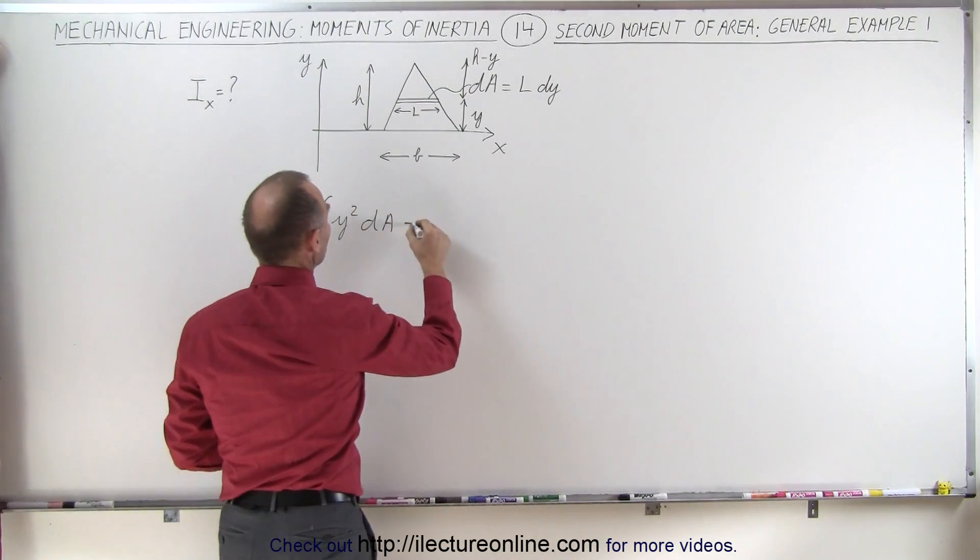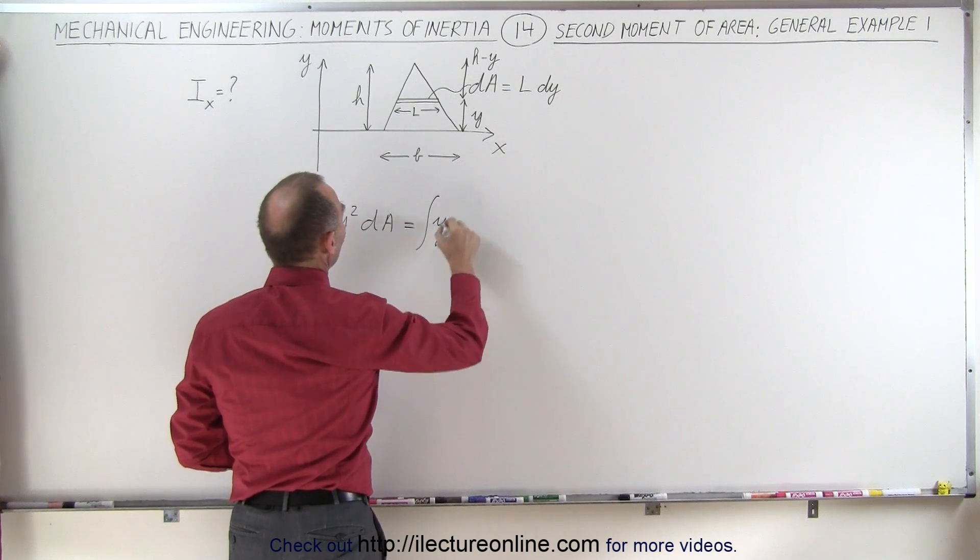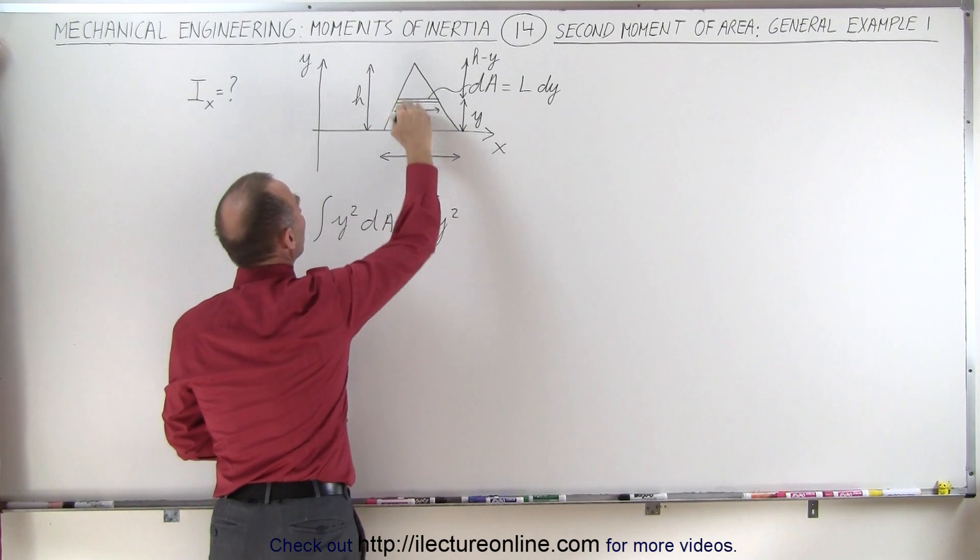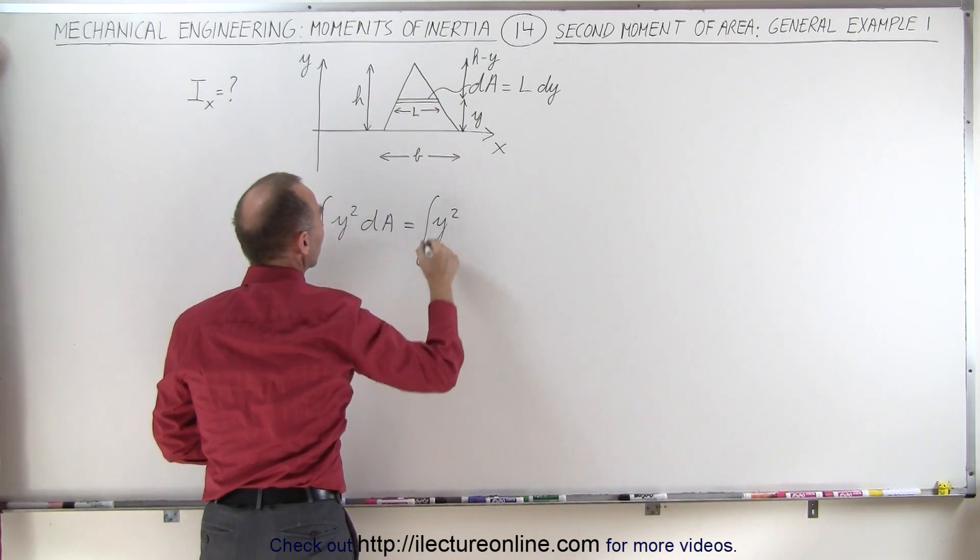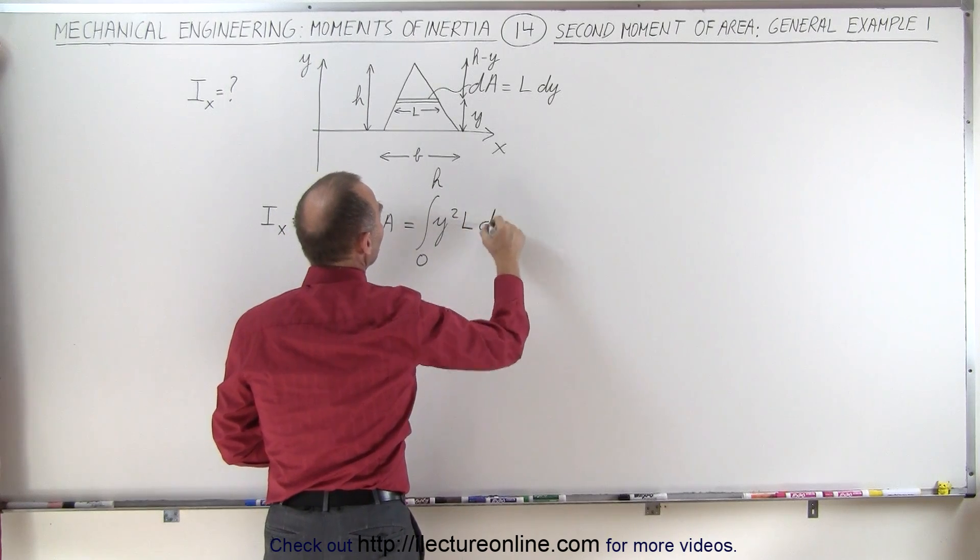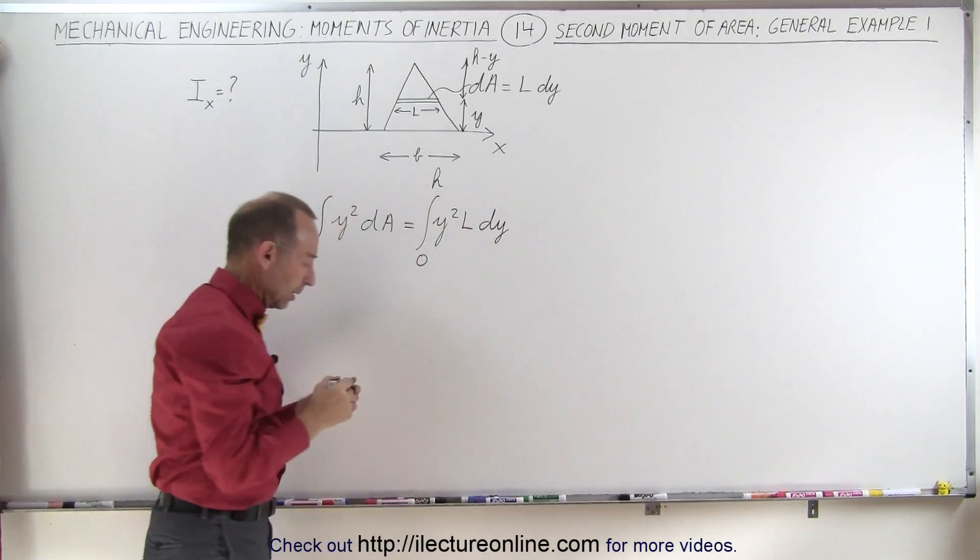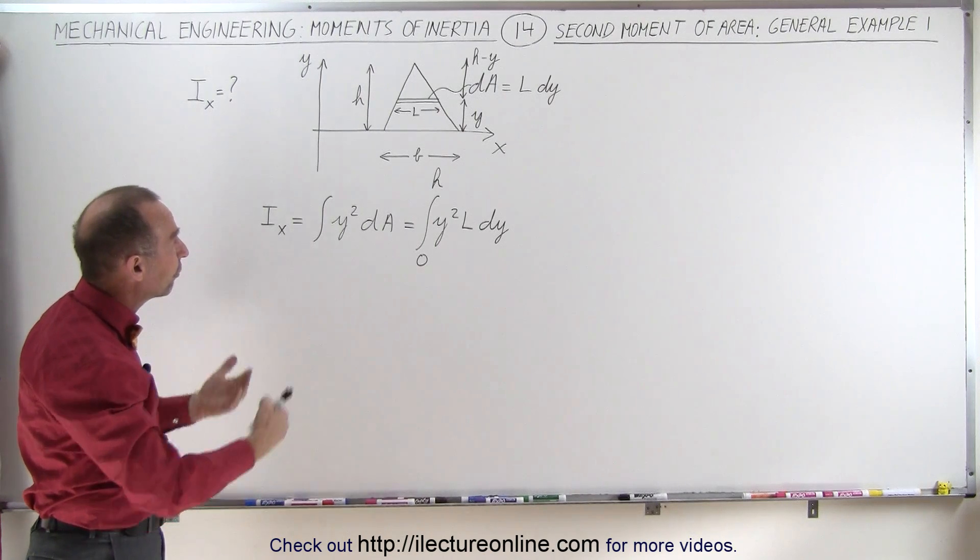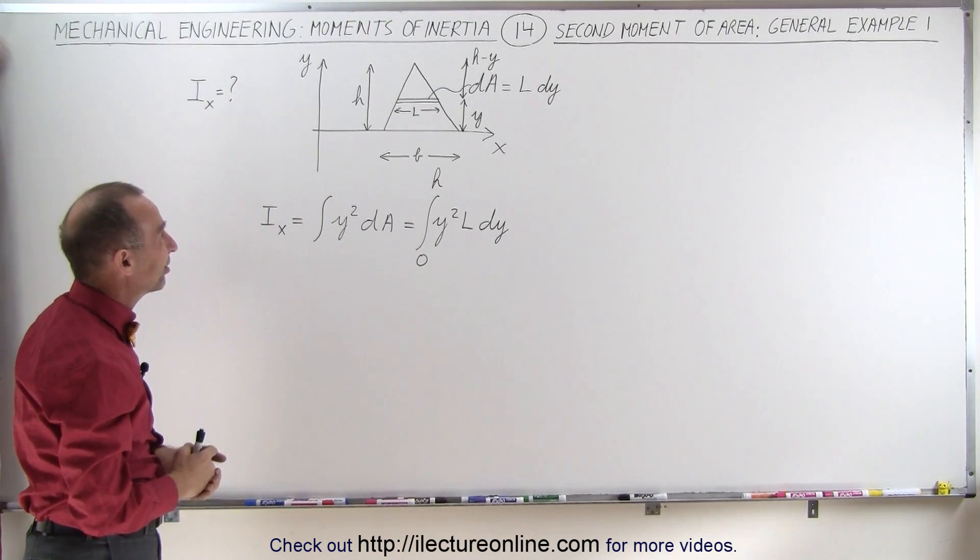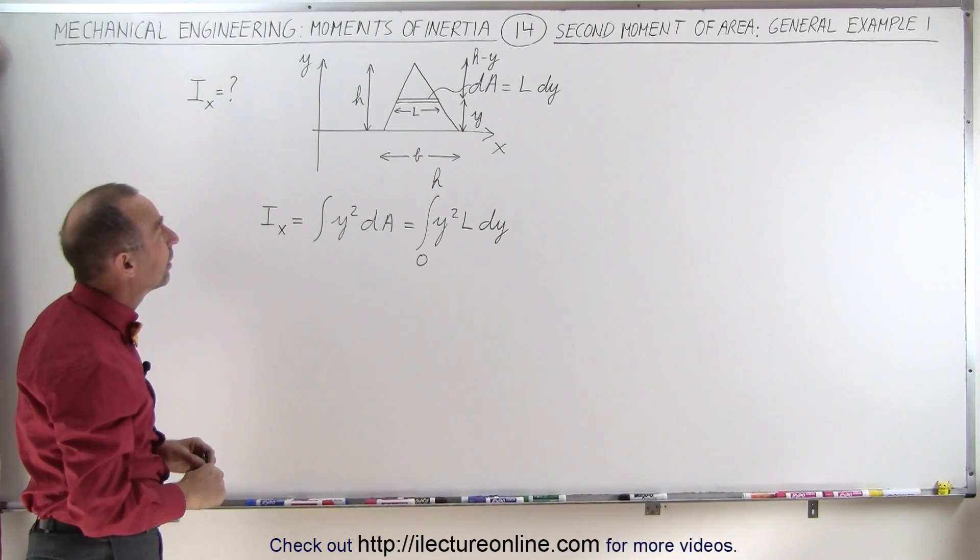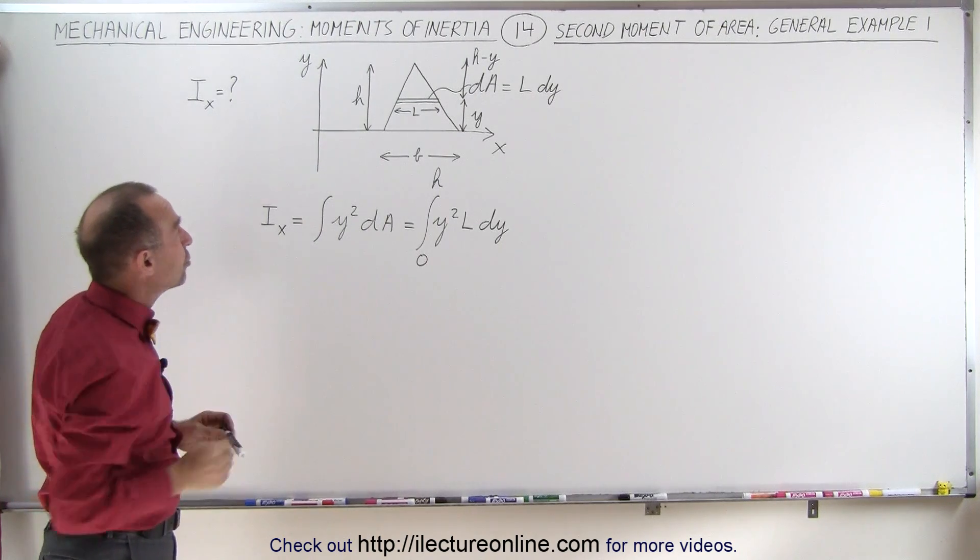So this is going to be equal to the integral of y squared. Notice the limits of integration is going to be from 0 to the maximum height, which is h, from 0 to h, and dA can now be written as L times dy. Now, we somehow have to write L in terms of where we are in the triangle, because L is going to be a changing length. It's not a constant.